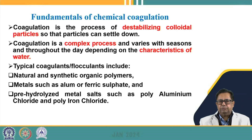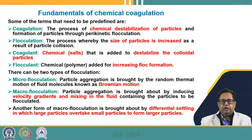Coagulation is a very complex process depending on the characteristics of the water, which may change with the season or even daily. It is necessary to fix the dose of coagulant needed to achieve maximum removal of colloidal particles. Different types of coagulants and flocculants include natural and synthetic organic polymers, metals such as alum and ferric sulfate, and pre-hydrolyzed metal salts such as polyaluminum chloride or poly iron chlorides.